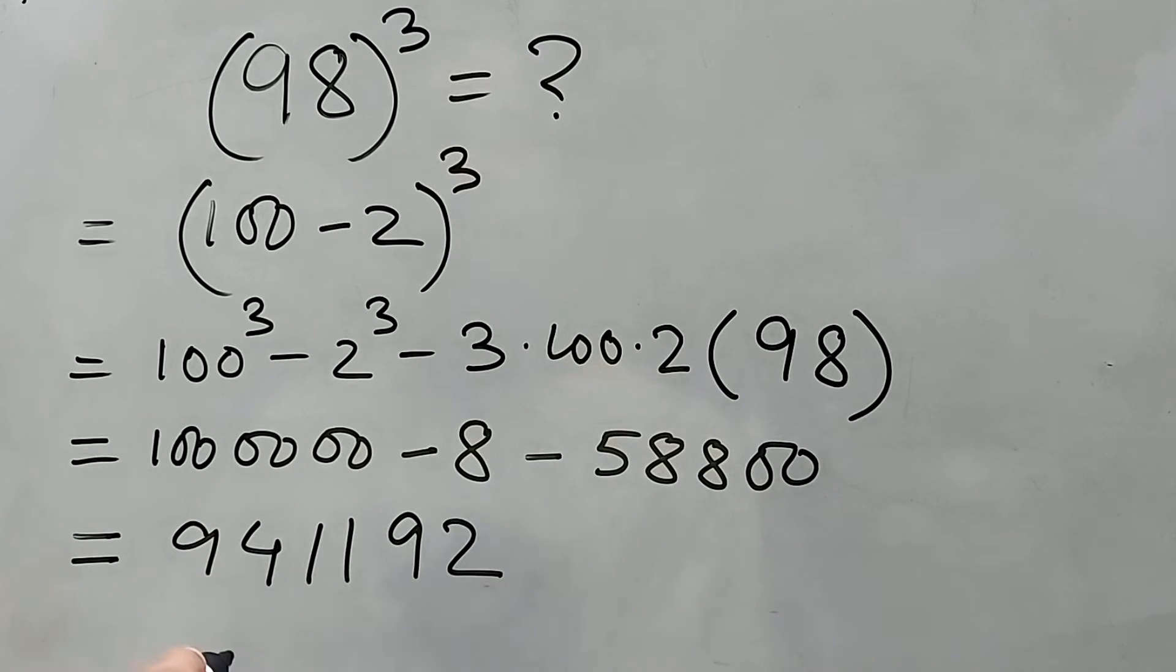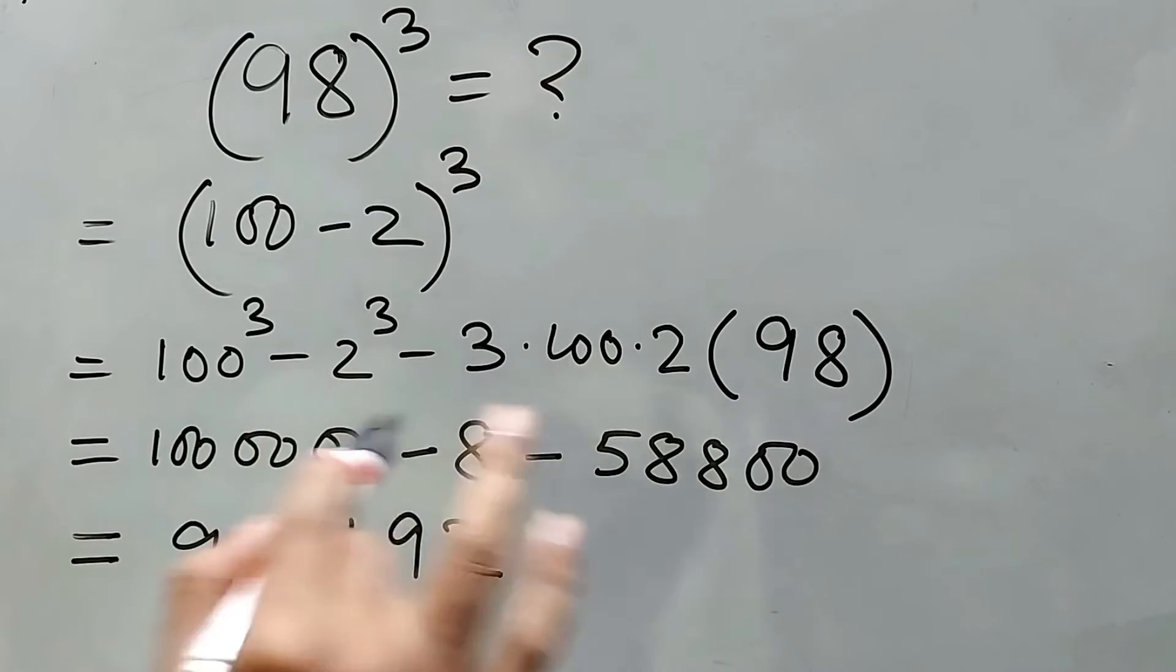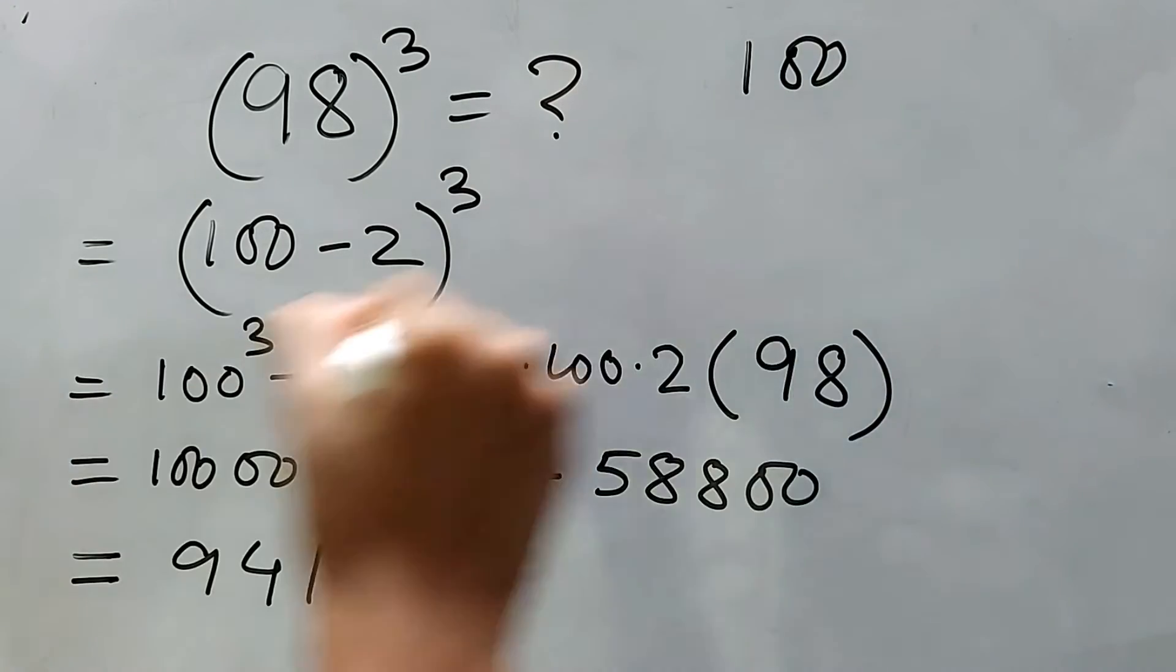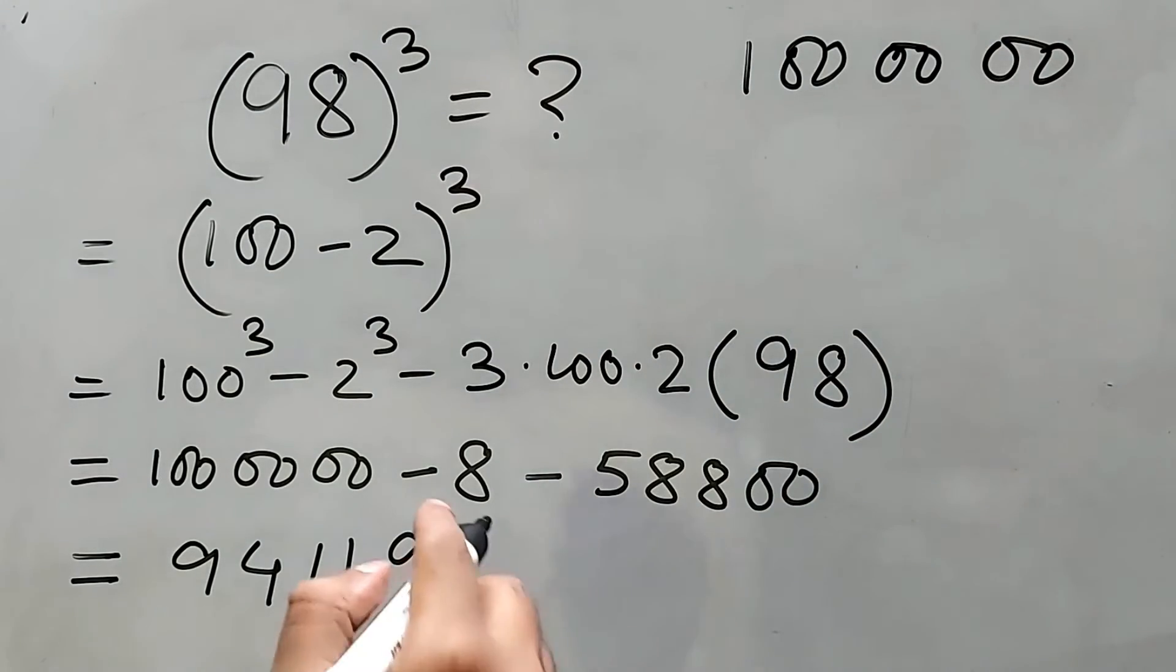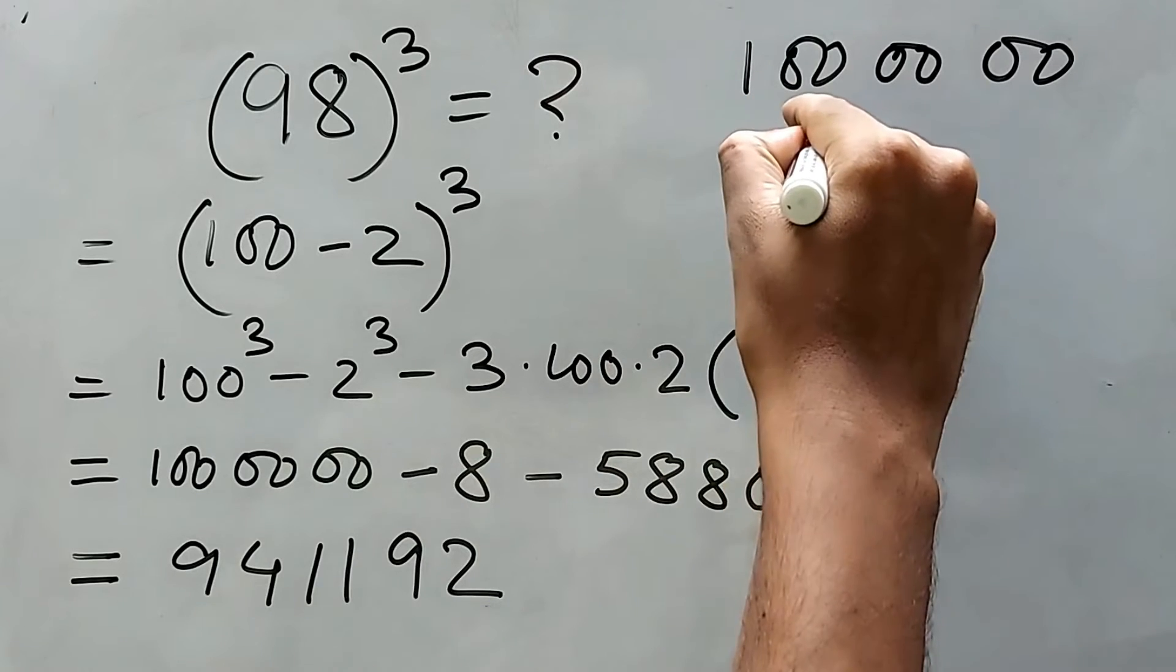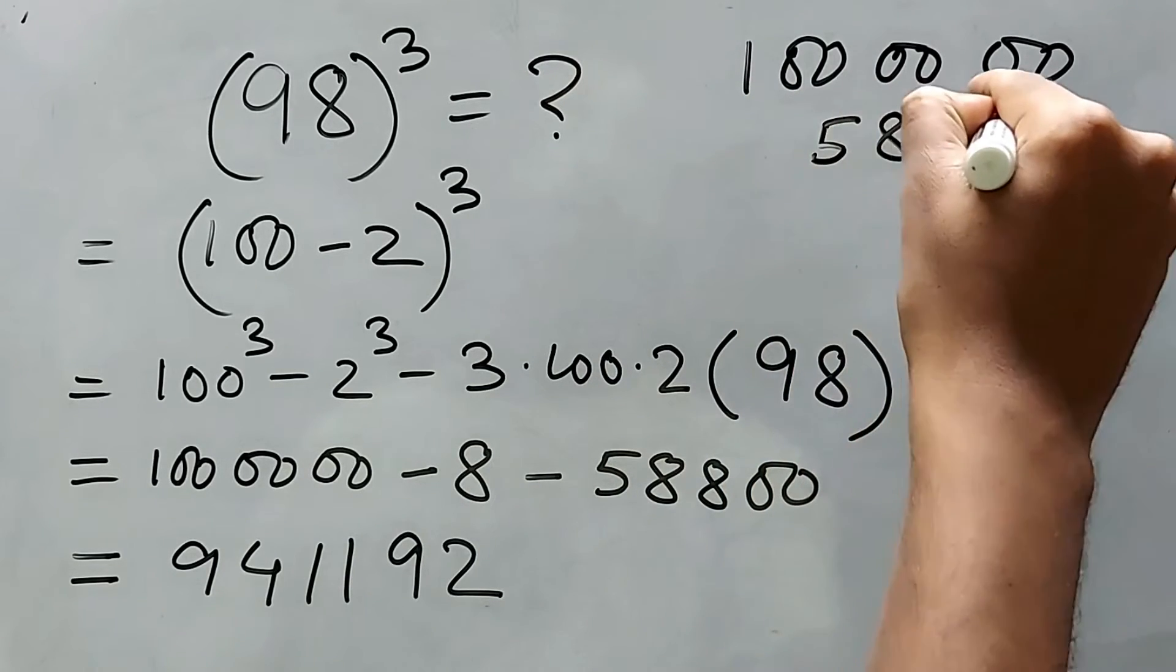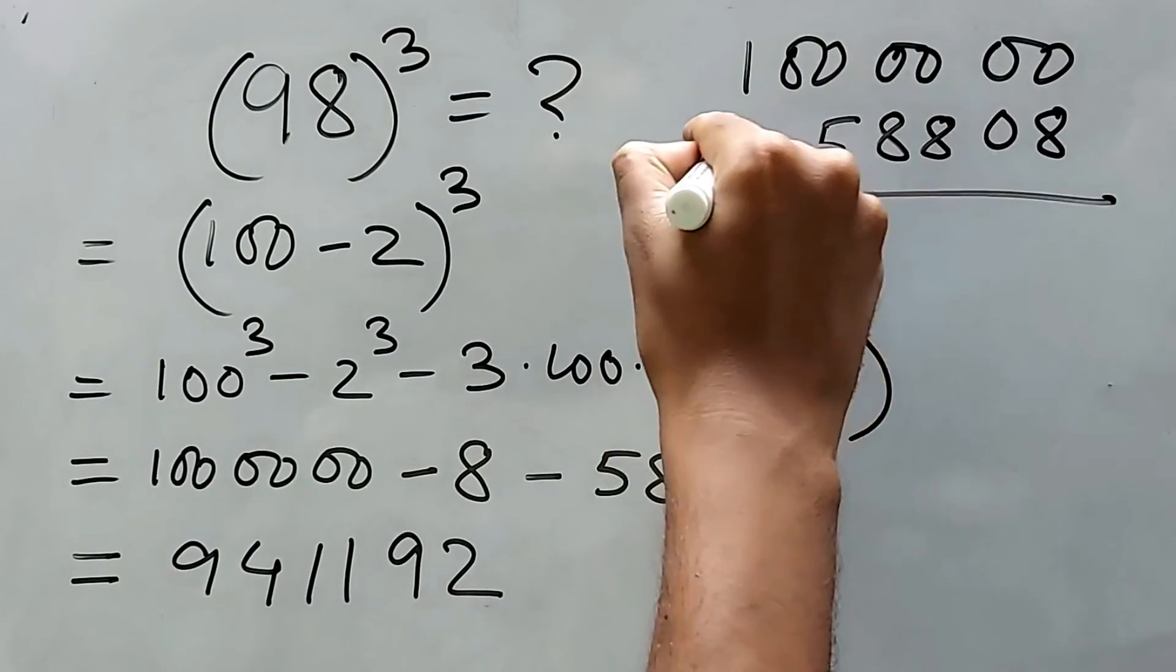Whenever you have to subtract something from this type of 1000000, whatever you are having, say I'm just taking the same number: double zero, double zero, and double zero. Now I have to subtract this: 58808, right? This is the number you have to subtract.